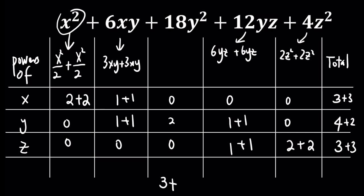We see that each variable's power sum is consistent across terms. This consistency helps us apply the AM-GM inequality effectively.